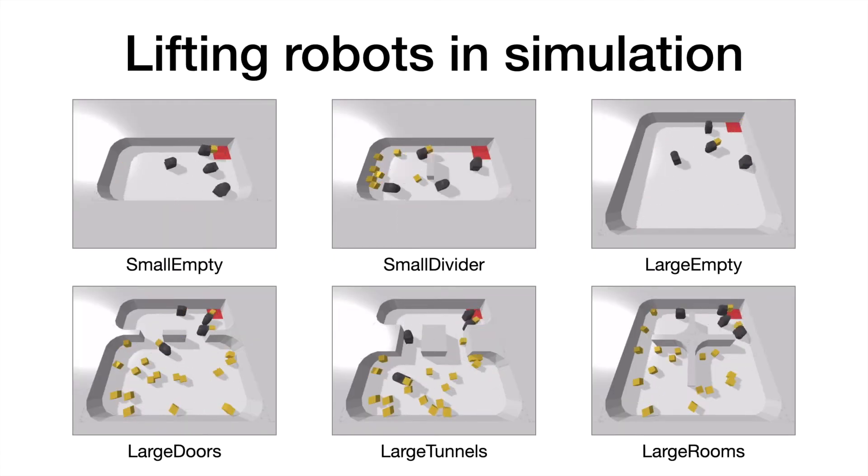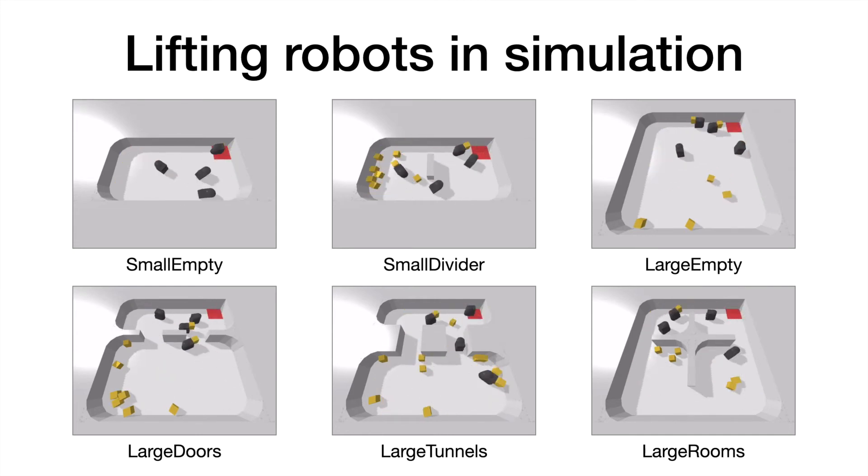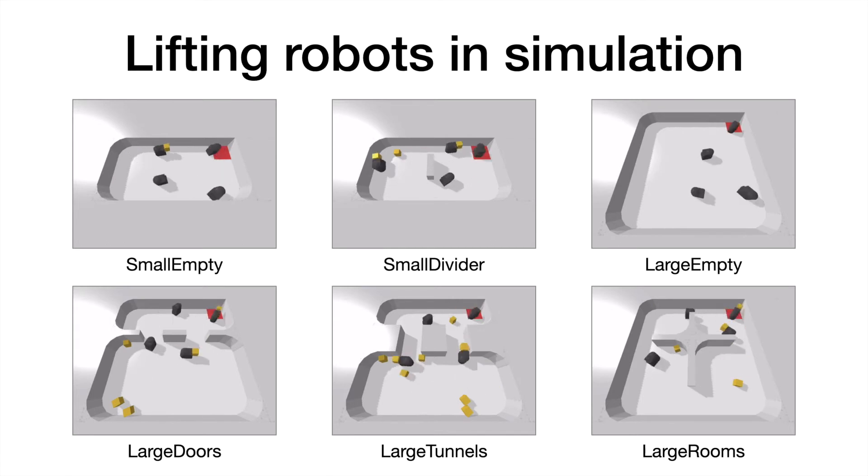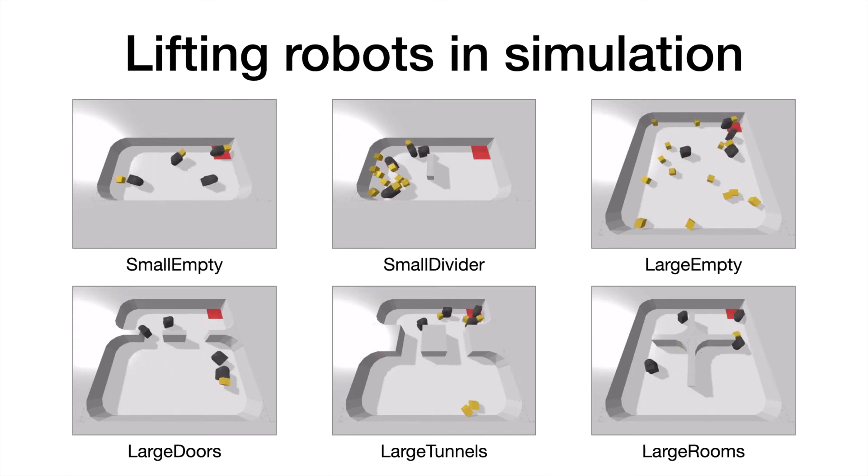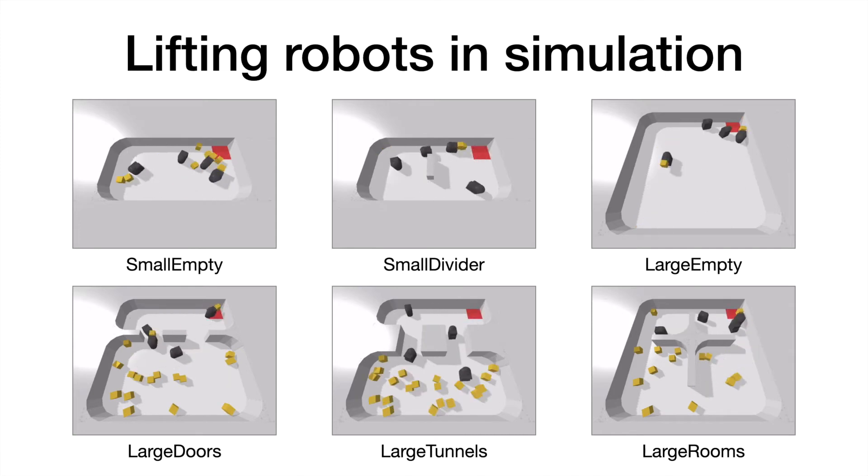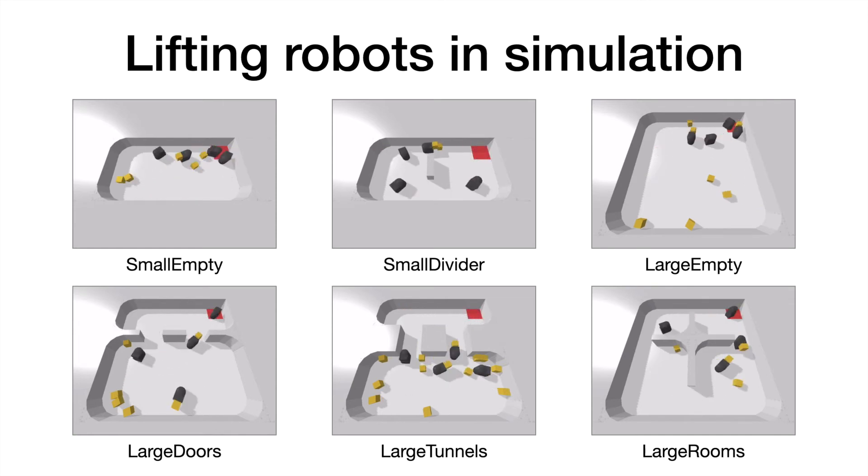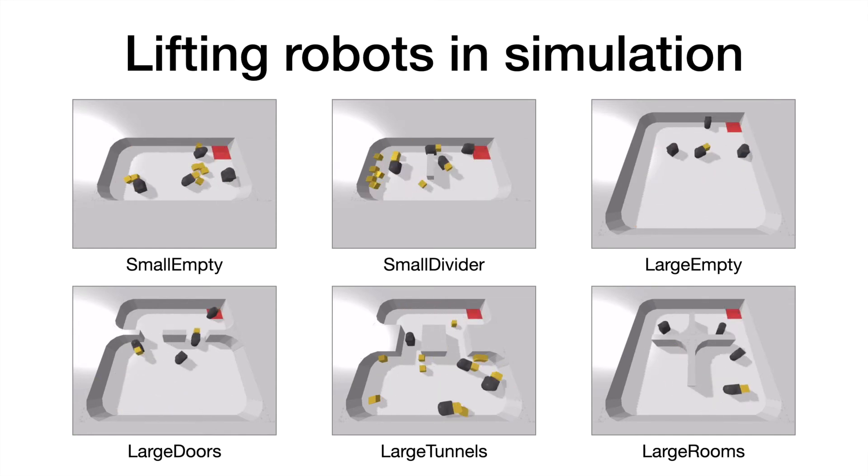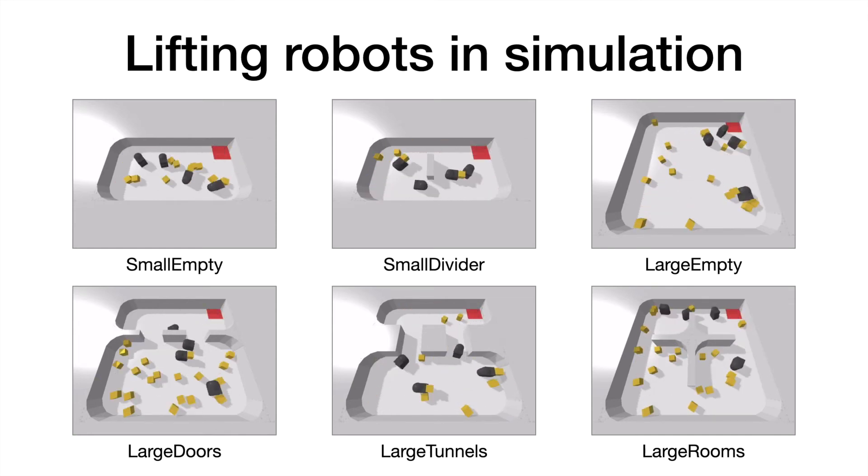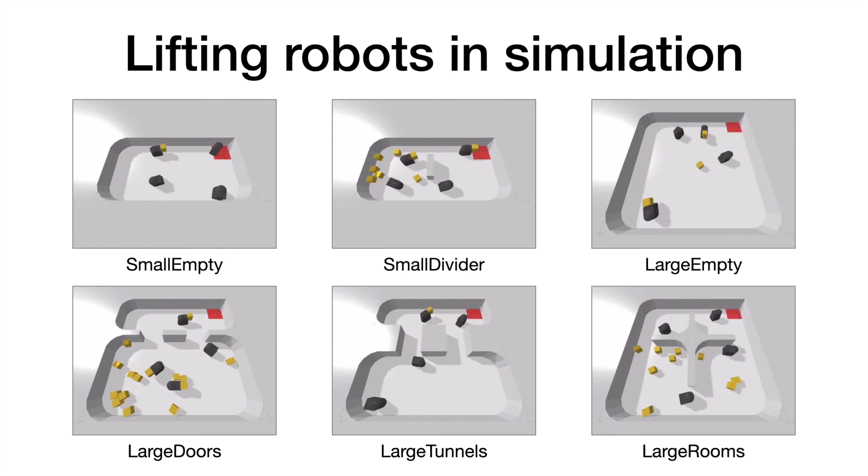Here we show teams of lifting robots that were trained for foraging in several different simulation environments. Some of the environments have bottlenecks, such as doorways and tunnels, which force the robots to coordinate taking turns. Since the robots know each other's intentions, they are able to choose actions that avoid conflict with other robots. We observe that the robots can smoothly complete the task while coordinating to minimize collisions.